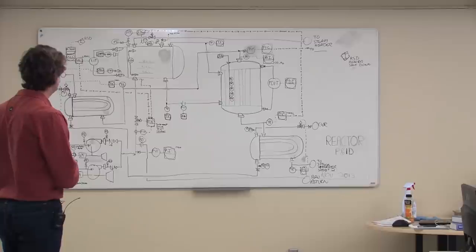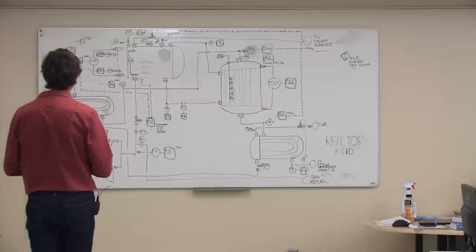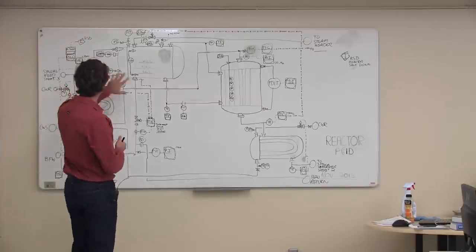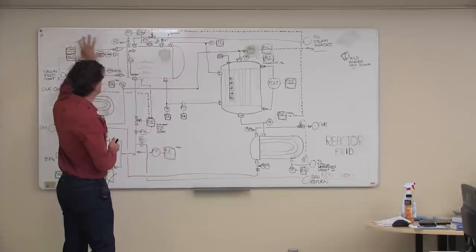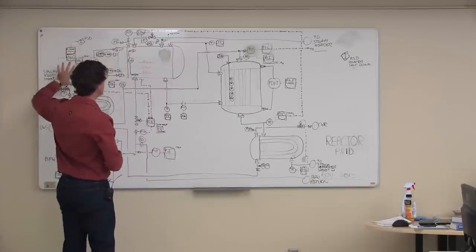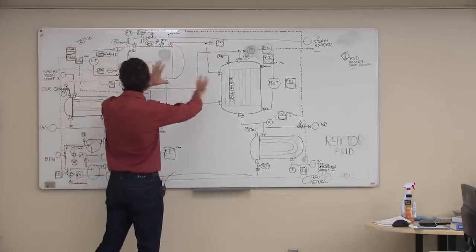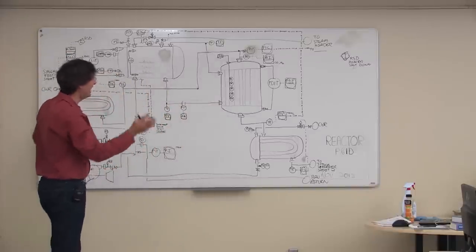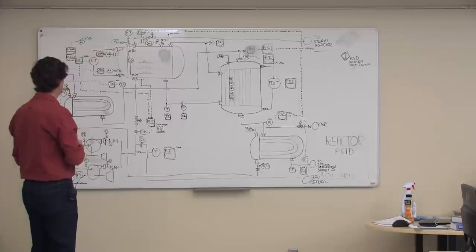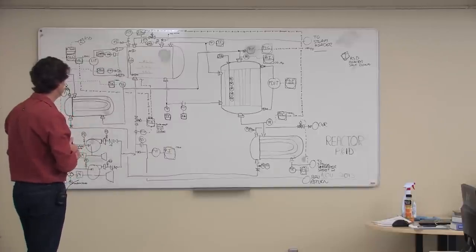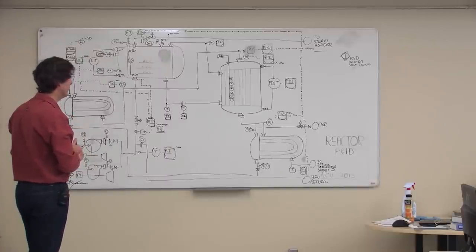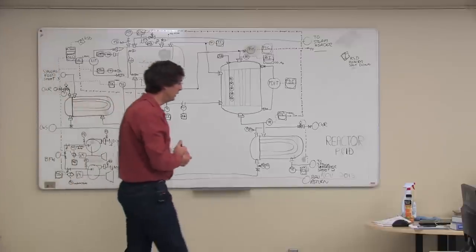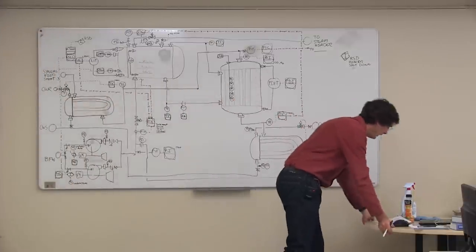It gets messy with controls when you start to really layer them on. I think we've only just started in terms of controls — I could see this getting more complicated. If I was going to redraw this, I'd start to shift stuff over a little and give myself more space on the P&ID. That's why doing an 8.5 by 11 prototype of your P&ID is a good idea.